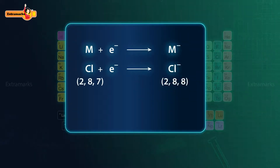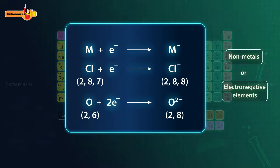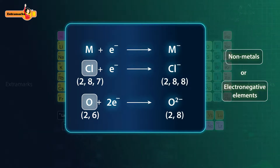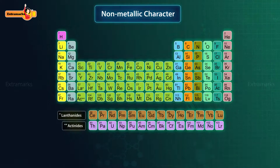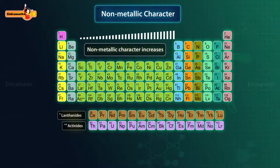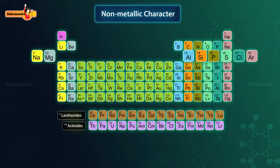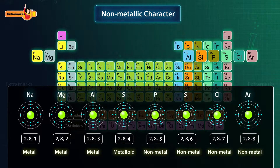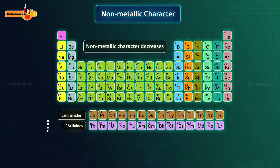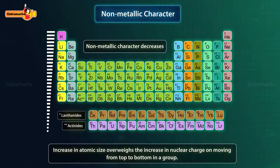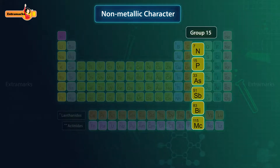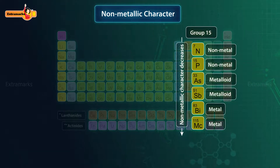The elements which have a tendency to gain electrons to form negative ions are called non-metals or electronegative elements. Chlorine and oxygen are non-metals; they gain 1 and 2 electrons respectively to attain an octet in their outermost shell. On moving across a period, the non-metallic character increases — that is, the tendency to gain electrons increases — due to an increase in nuclear charge and a decrease in atomic size. Consider period 3, where non-metallic character increases from sodium to argon. Non-metallic character decreases down the group because the increase in atomic size overweighs the increase in nuclear charge. For example, in group 15, the non-metallic character decreases and the metallic character increases down the group.